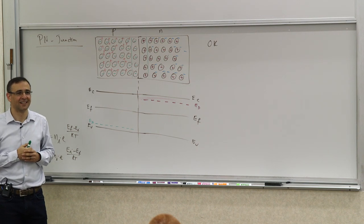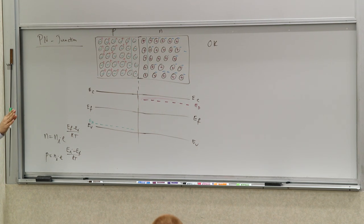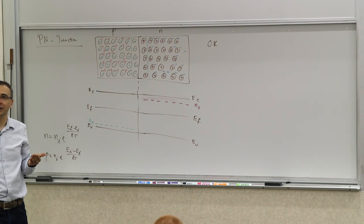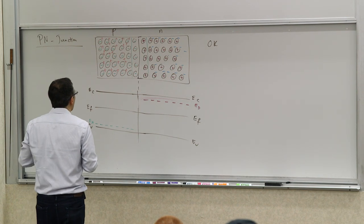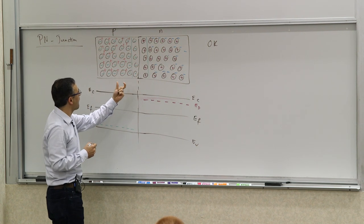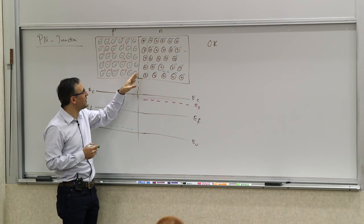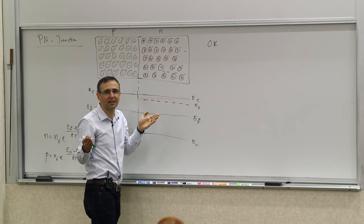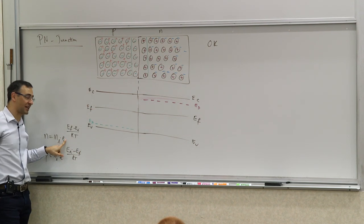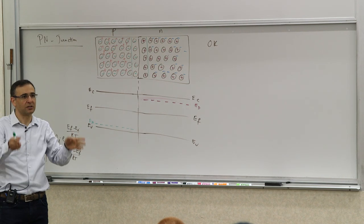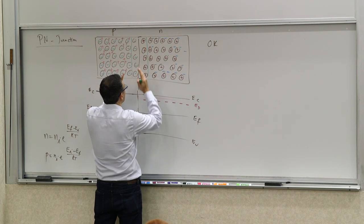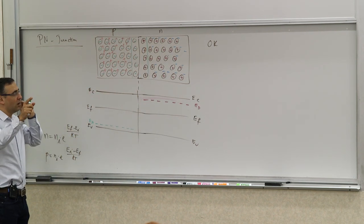Question: what does it look like in terms of the energy band diagram? We'll get to that. Once this depletion region is formed, it's kind of shown as an abrupt thing, but it's really a gradual transition. This abrupt approximation is good because of the exponential — the exponential drop happens really, really rapidly. So it's called a depletion approximation: you can assume this is a well-defined region. It's a pretty good approximation because of this exponential.